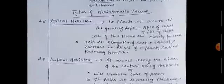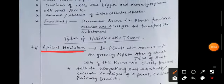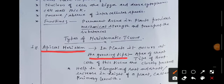Now the types of meristematic tissue. Meristematic tissue is of three types. First is the apical meristem. It is the meristematic tissue in plants which occurs at the growing tips of plants. These are the apex of shoot and tips of root. The cells of this tissue are closely packed.